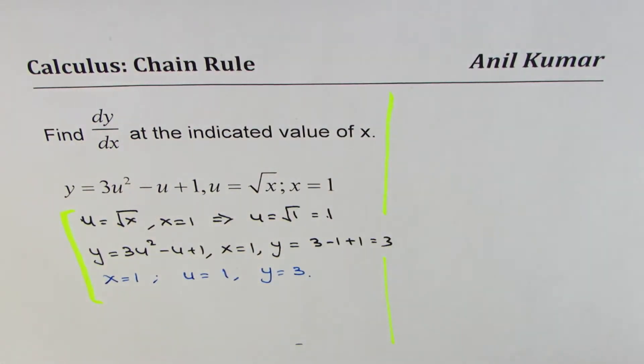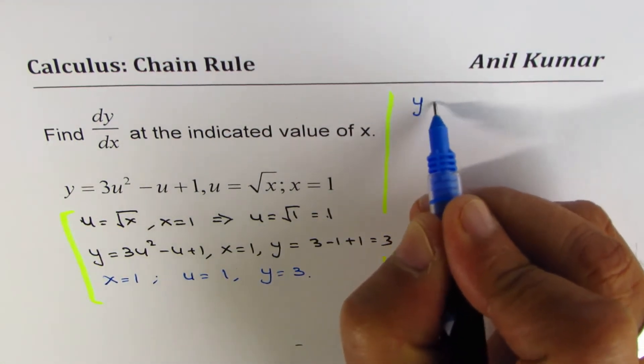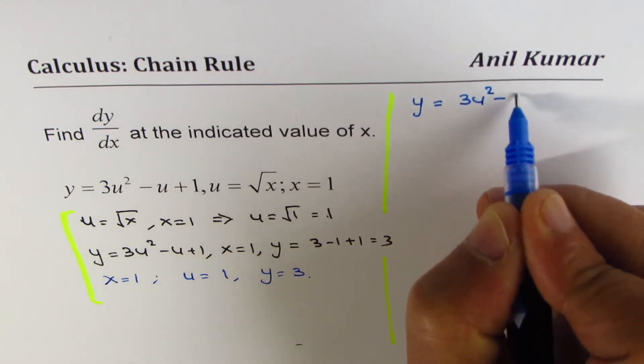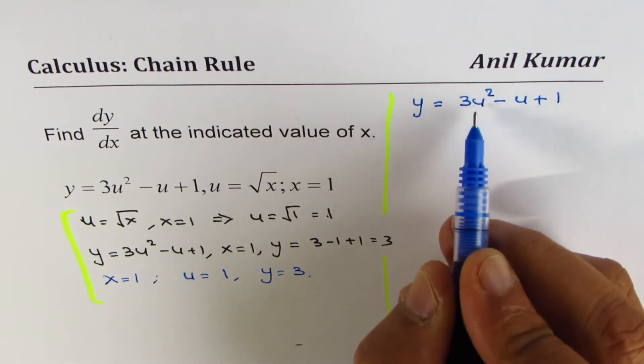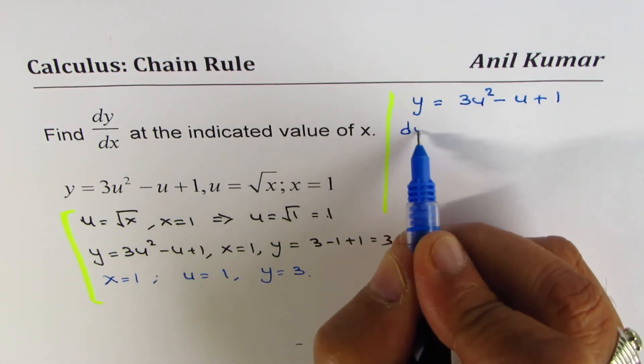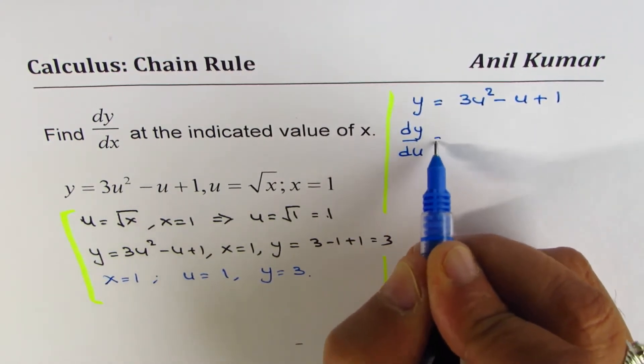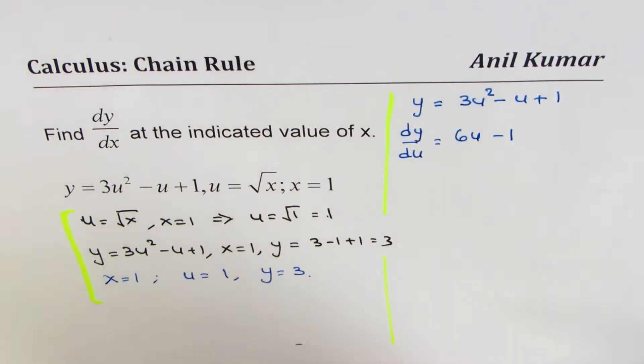Now what we will do is we'll find derivatives. We're given y equals 3u² minus u plus 1. We can differentiate this function with respect to u. So dy/du will be equals to 6u minus 1.